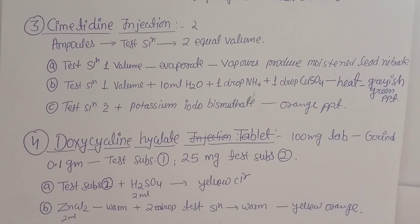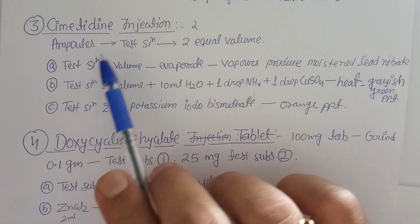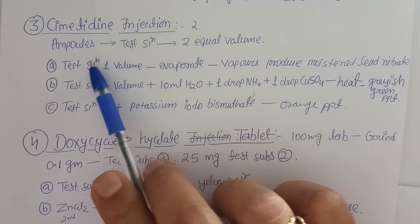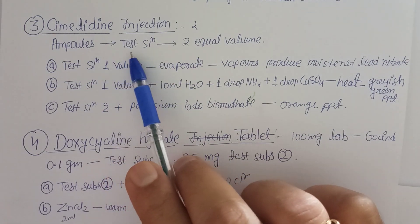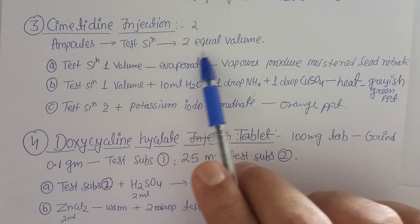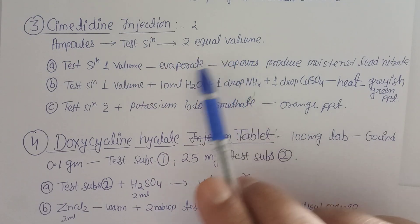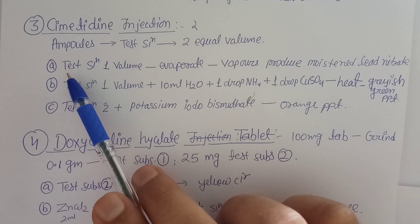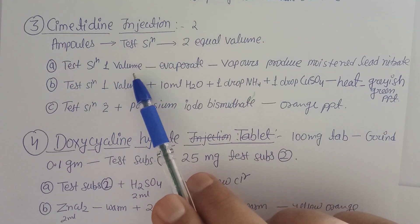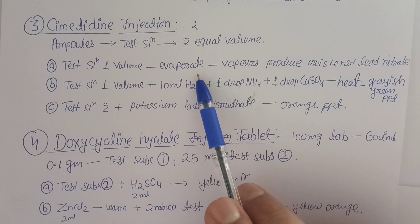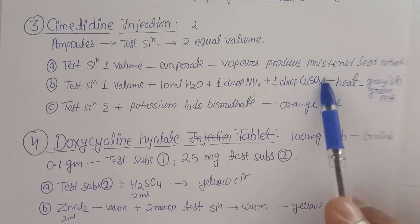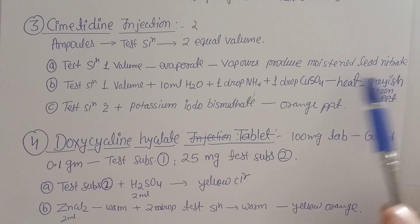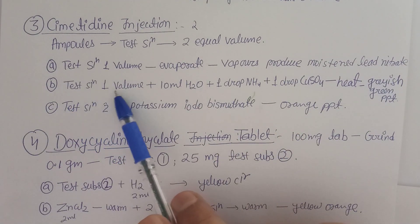The third drug, starting from alphabet C, is cimetidine injection. Break the ampoule and divide into two equal volumes. For the first basic test: take the Test Solution 1 volume, evaporate it — the vapor produced with moisture and lead nitrate confirms the presence of cimetidine in the injection.